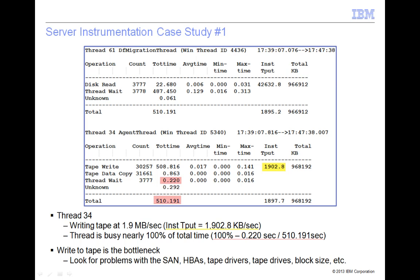Now we will look at the tape writes from thread 34. The thread is writing to tape at 1,902.8 kilobytes per second, or 1.9 megabytes per second. This is well below what we would expect of a modern high-speed tape drive. The thread wait time is less than one second — this thread is busy nearly 100% of the measurement time. The tape writes are clearly the bottleneck.